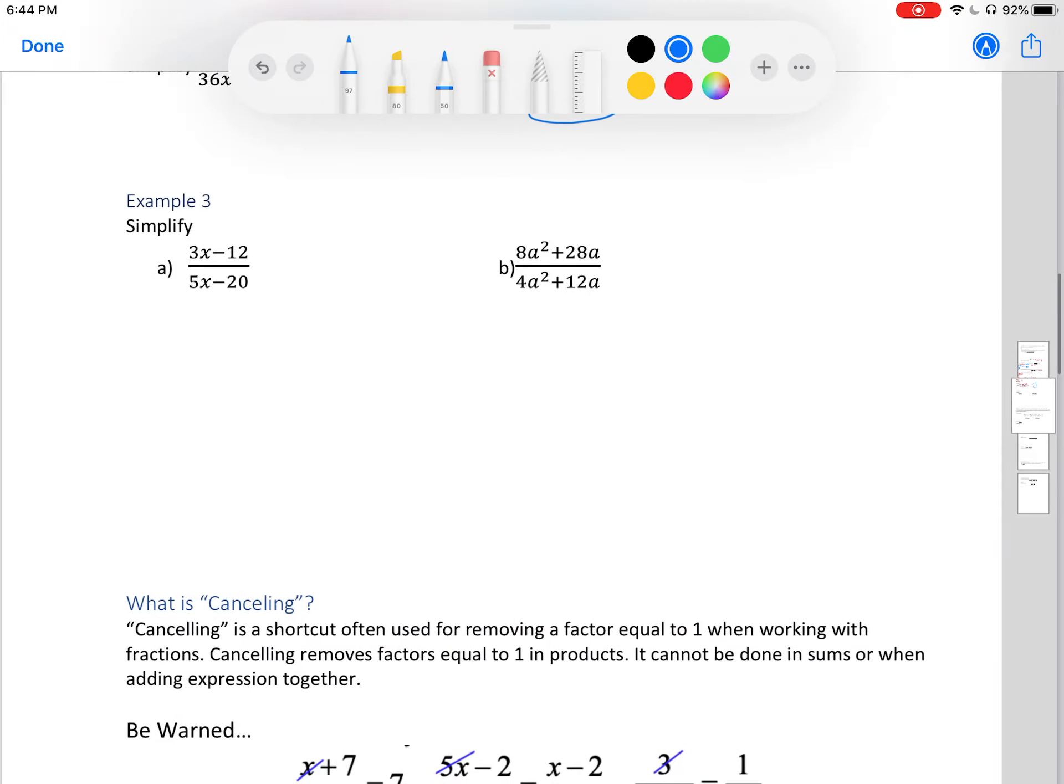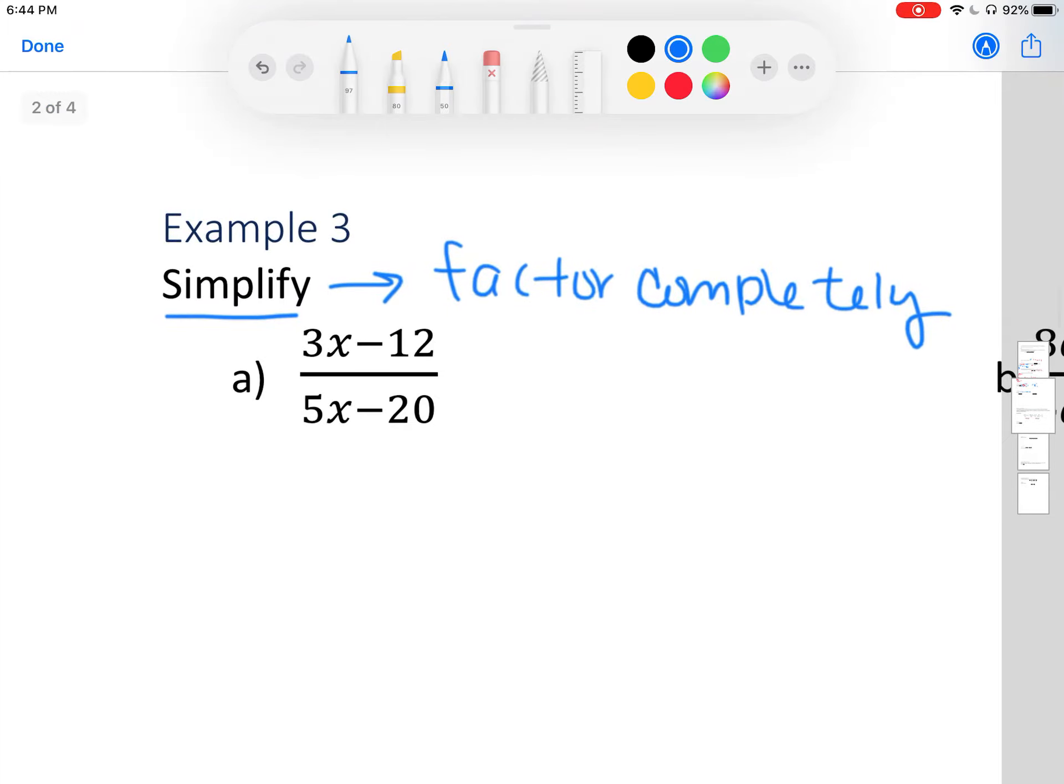In example 3, we're going to simplify polynomials. So when you're simplifying polynomials, or when you hope to simplify, your biggest hint is to factor completely. That way you can see we have something divided by itself. So in this first problem, let's go ahead and start off by factoring the numerator. So I see they have a 3 in common. If I divide out a 3, I'm left with x. And then 12 divided by 3 is 4. In my denominator, I can divide out a 5, left with x minus 4. We see how x minus 4 and x minus 4 make 1. So that we're just left with 3 over 5.